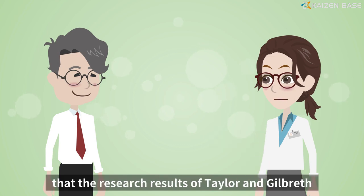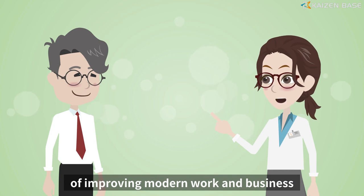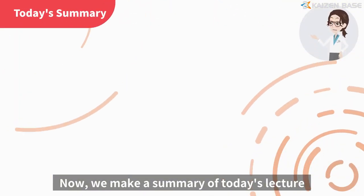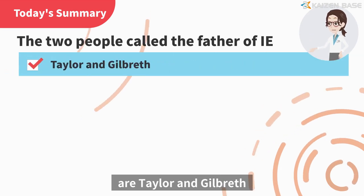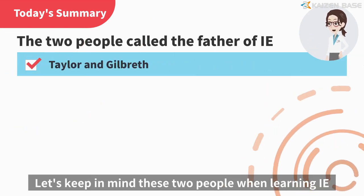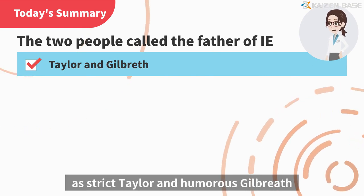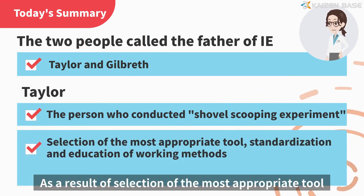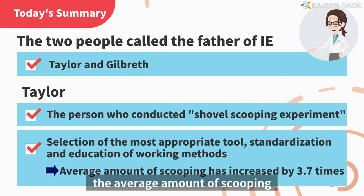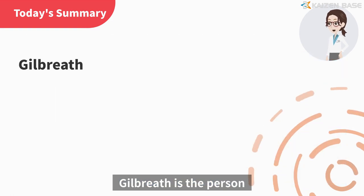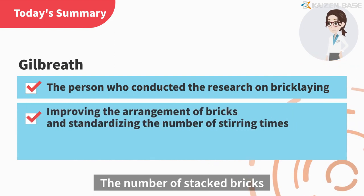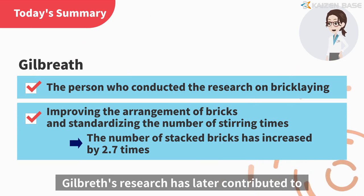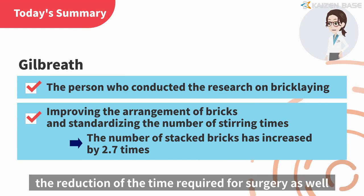The research results of Taylor and Gilbreth have become the cornerstone of improving modern work and business. To summarize: the two people called the father of IE are Taylor and Gilbreth — easy to remember as strict Taylor and humorous Gilbreth. Taylor conducted the Shovel Scooping Experiment; through selection of the most appropriate tool, standardization, and education of working methods, the average amount of scooping increased by 3.7 times. Gilbreth conducted research on bricklaying; the number of stacked bricks increased by 2.7 times by improving brick arrangement and standardizing the number of stirring times. Gilbreth's research also contributed to the reduction of surgery time.